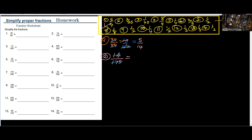7 into 14 gives me 2, and 7 into 175: 7 into 17 is 2 remainder 3, and 7 into 35 is 5. So the answer is 2 over 25. The second answer is also correct. Let's look at the third one — we have 12 over 400.